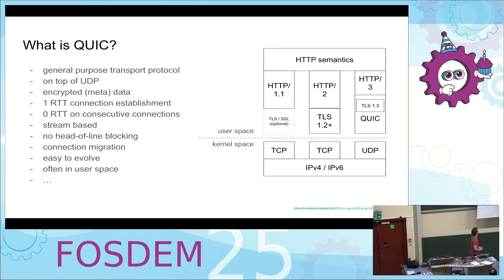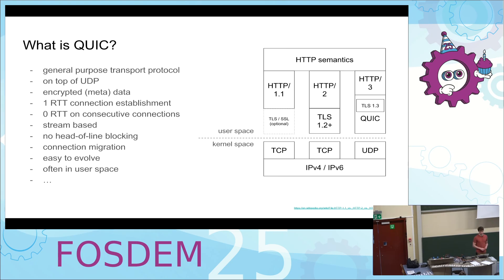What is QUIC? QUIC is a general purpose transport protocol running on top of UDP. The big thing here is that QUIC comes with its own encryption — it encrypts both the data itself and the metadata, so the protocol data, which is very powerful. It does connection establishment within one RTT, so you can send your first request after the first RTT. And then in ideal cases, even on consecutive connections, you can sometimes do zero RTT, which is wonderful, especially in a web context where latency really matters. It is stream-based — for those familiar with HTTP2 streams — and it does not have the problem of head-of-line blocking, since the stream mechanism is built into the transport protocol itself.